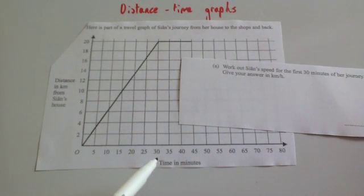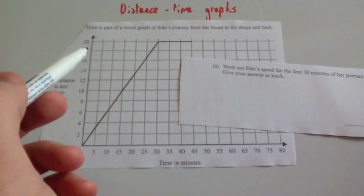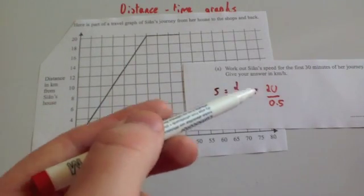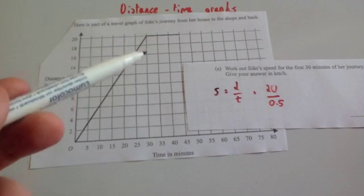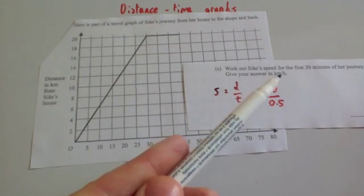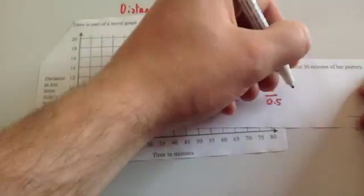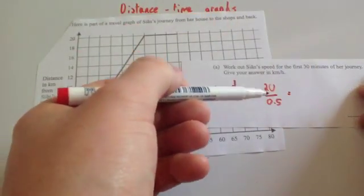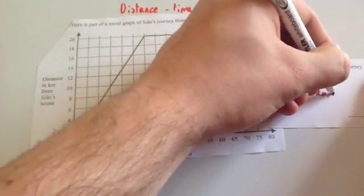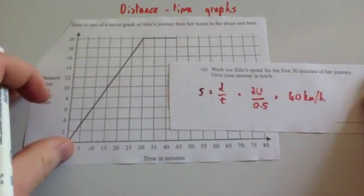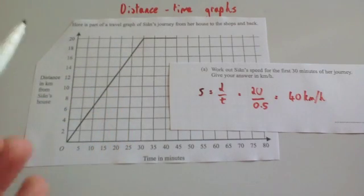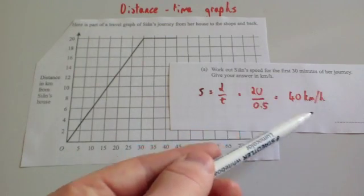In the first 30 minutes she travels 20 kilometres to the shops. Using speed equals distance over time: distance is 20 kilometres, and 30 minutes is half an hour, so we divide by 0.5. 20 divided by 0.5 equals 40, so her speed is 40 kilometres per hour. Another way to see this: in half an hour she goes 20 kilometres, so in a whole hour she would go 40 kilometres — confirming a speed of 40 kilometres per hour.